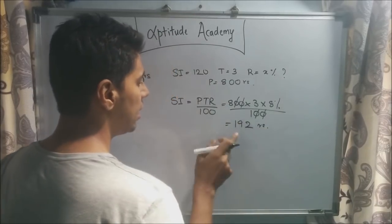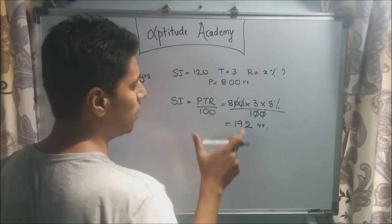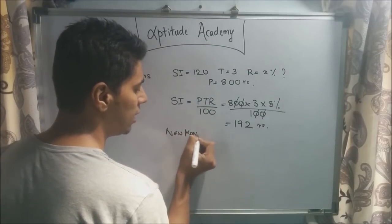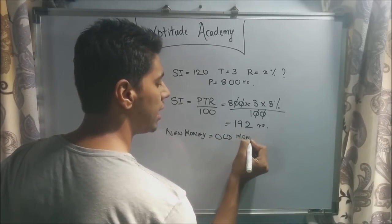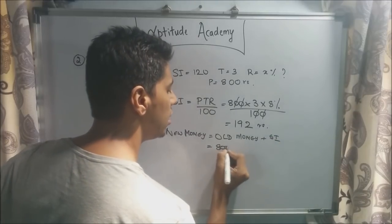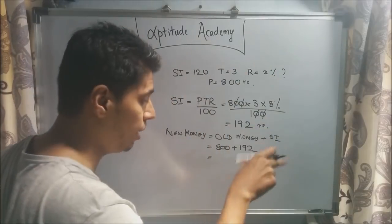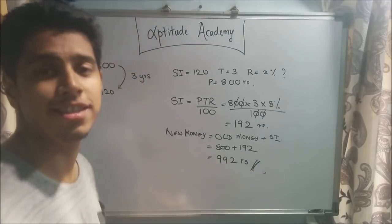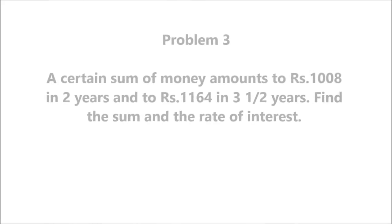The new simple interest is 192 rupees, compared to 120 previously. So the new money equals old money plus SI, which is 800 plus 192, giving a new money of 992 rupees. Had you put it in bank B, you would receive 992 rupees. That's the answer.